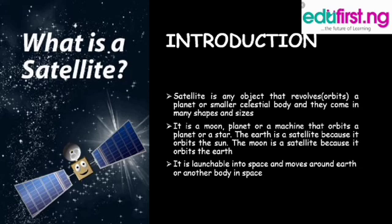What is a satellite? A satellite is any object that revolves or orbits a planet or a smaller celestial body. They come in many shapes and sizes. A satellite is a moon, a planet, or a machine that orbits a planet or a star. For example, the Earth is a satellite because it orbits the Sun, and the moon is a satellite because it orbits the Earth. Usually a satellite is a machine that is launched into space and moves around Earth or another body in space.